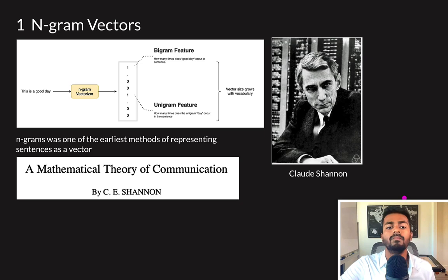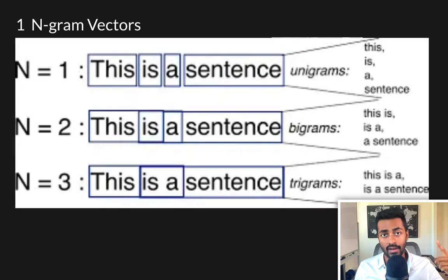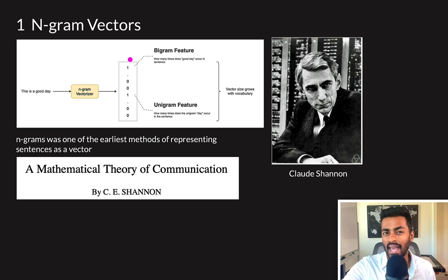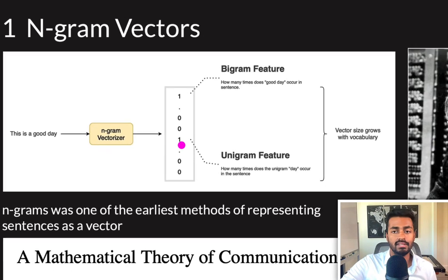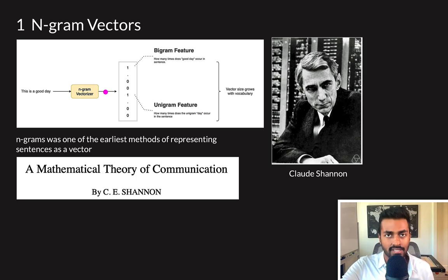Let's get to it. We start a discussion with the n-gram vectors. Essentially, with n-gram vectors, we take a sentence, we'll break it down into its corresponding unigrams, bigrams, trigrams, and so on, and then use those representations in the form of a vector. For example, this first item here could be like a bigram feature that says, how many times does the bigram 'good day' occur in a sentence? And similarly, we can have a unigram feature here. It's like one if it occurs once, two if it occurs twice, and so on. This here was one of the earliest representations of sentences introduced by the father of information theory, Claude Shannon, way back in a dissertation in 1948.